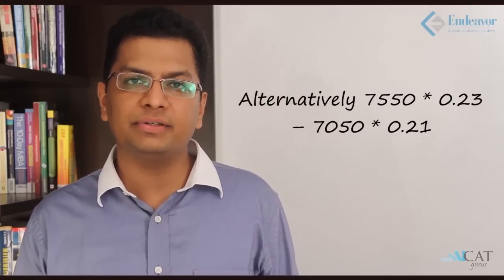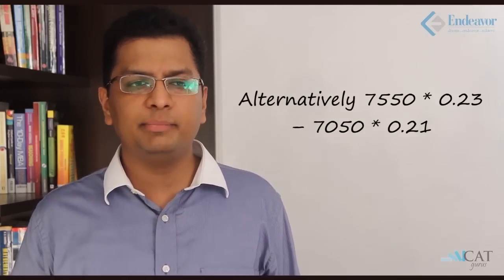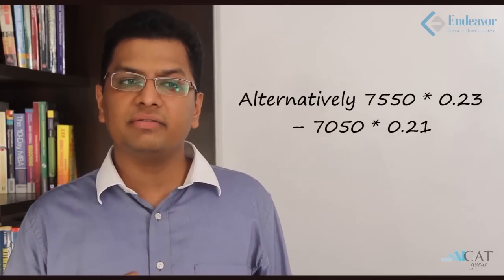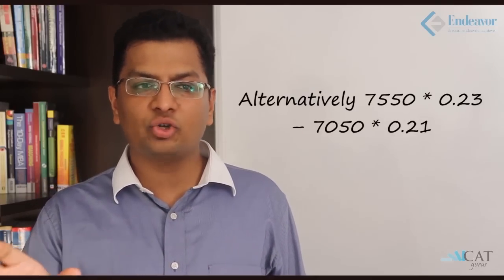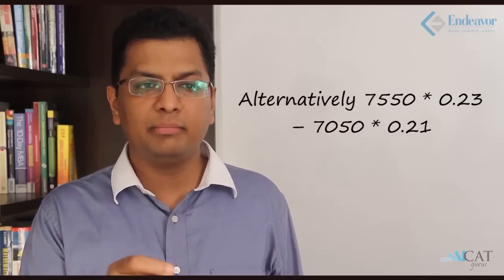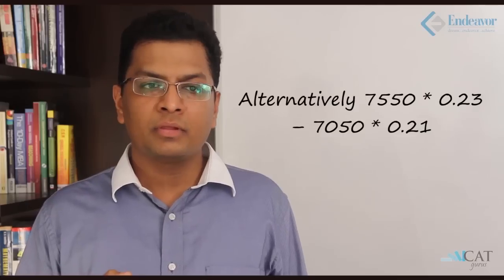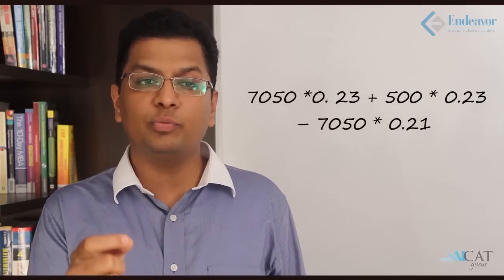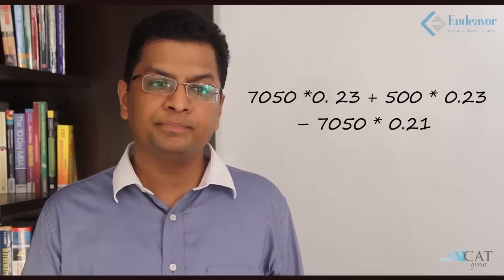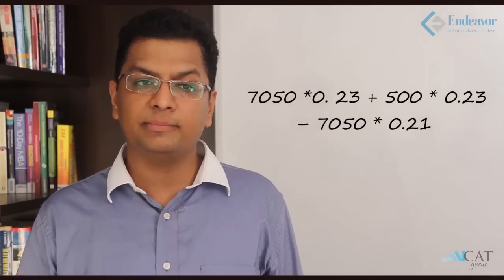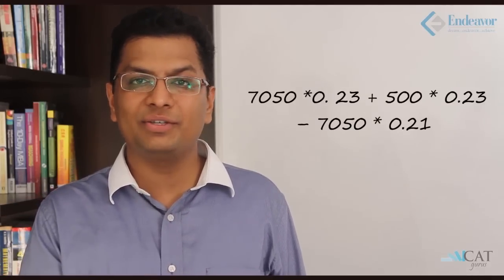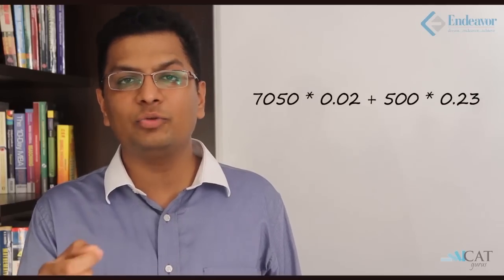We can subtract and then multiply by 12 to get the annual figure, or make each annual first and then subtract — either way we get ₹33.79 lakhs as the answer. Alternatively, factor out 1100: compute 7550 × 0.23 − 7050 × 0.21, which breaks down to 7050 × 0.02 + 500 × 0.23, making the calculation much simpler. Then multiply by 1100 and by 12 to get the annual difference directly.